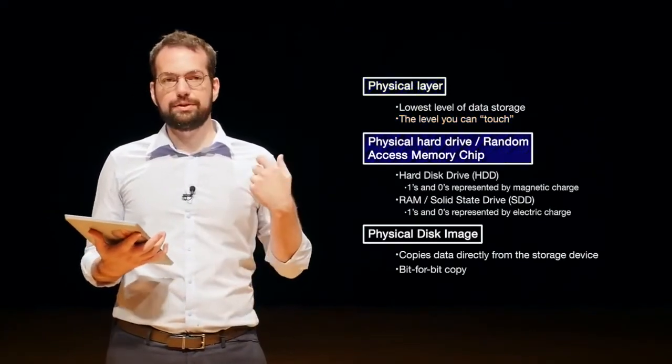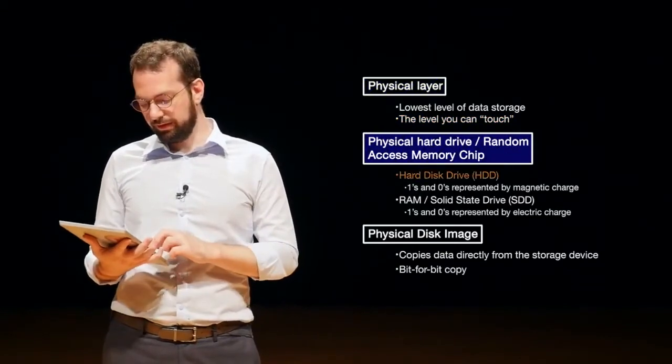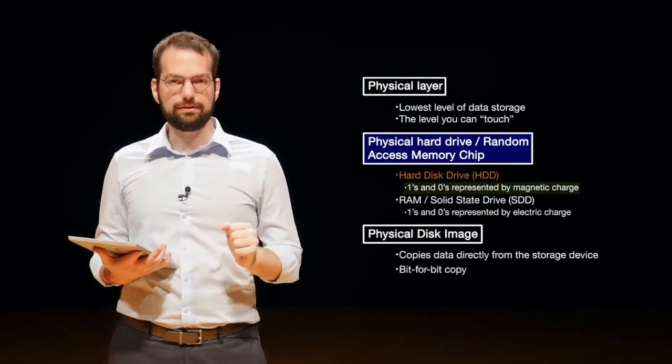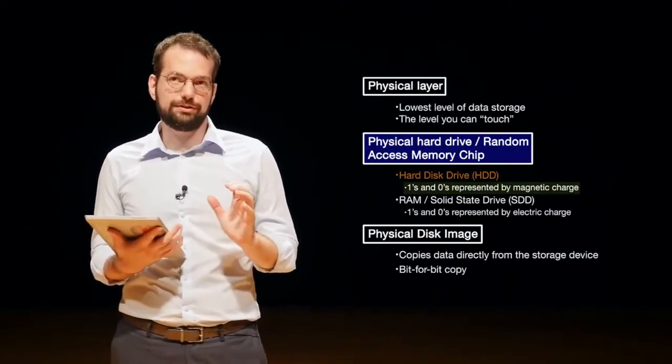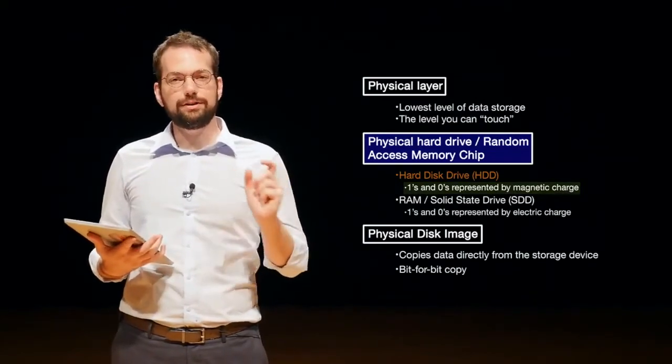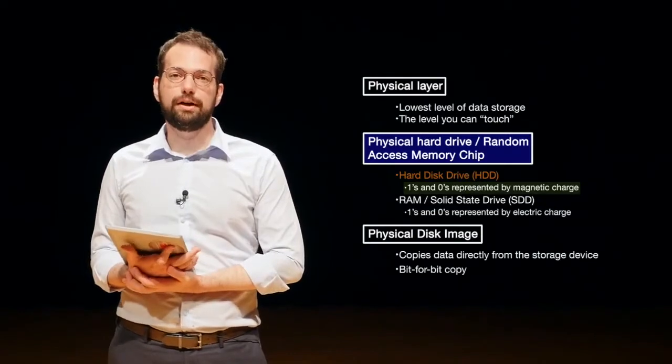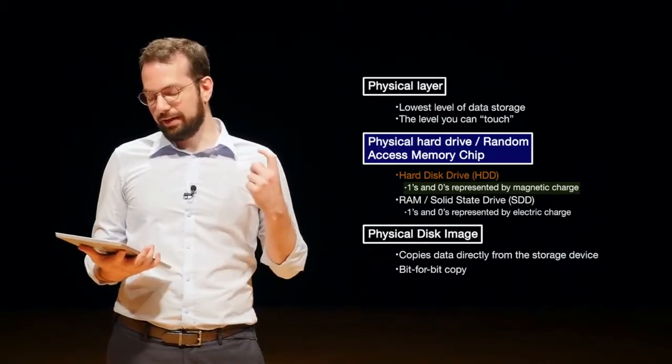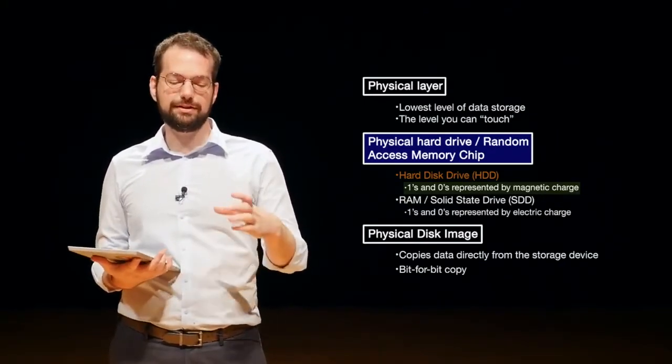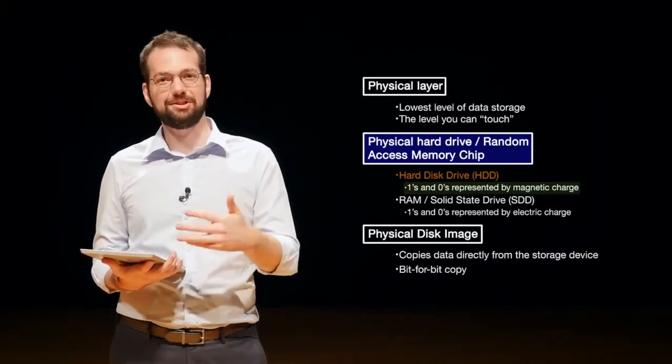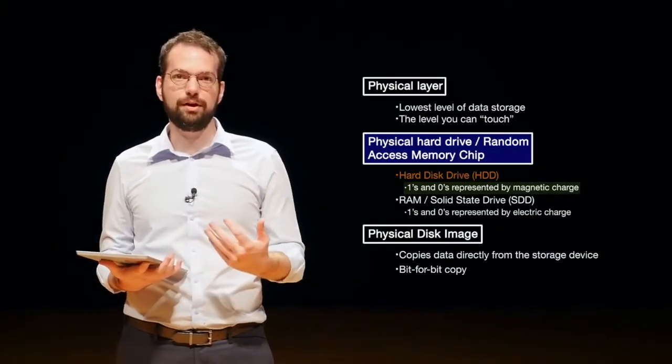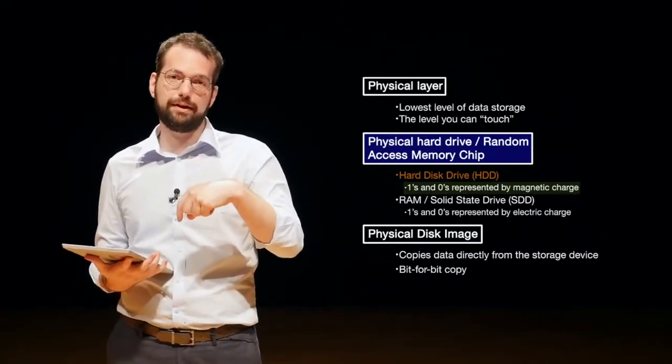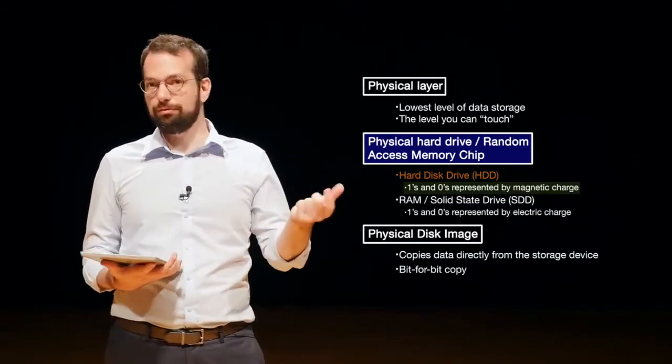There's a couple different ways that we commonly store data now on the physical layer. The first and oldest way is on hard disk drives, the hard drives you would normally find in your computer. In these cases, the ones and zeros are represented by a magnetic charge. On the disk, there's a magnetic charge. If there's a magnetic charge, it's a one. If there's not, it's a zero. So we can go through and read magnetic charges on the disk and reconstruct the ones and zeros from that, then convert those ones and zeros into information that we can understand.